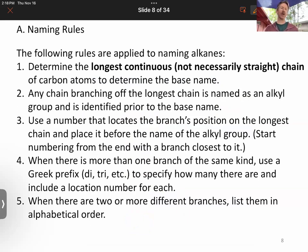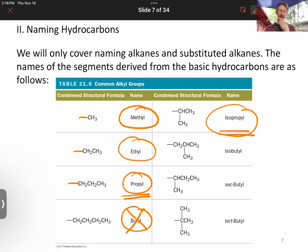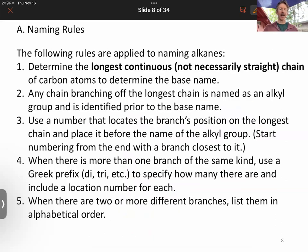Let's talk about some naming rules. The first thing you always do is determine the longest continuous and not necessarily straight chain of carbon atoms to determine the base name. Any chain branching off of the longest chain is named as an alkyl group. Use a number that locates the branch's position on the longest chain and start numbering from the end with a branch closest to it. When there's more than one branch of the same kind, use a Greek prefix. When there are two or more different branches, list them in alphabetical order. I know I went pretty fast there, but you've got them written down.